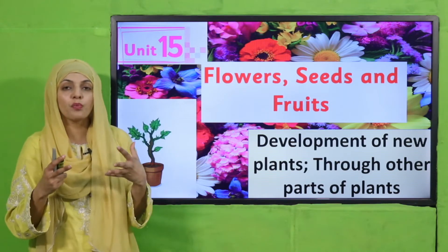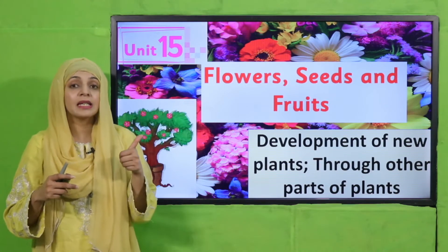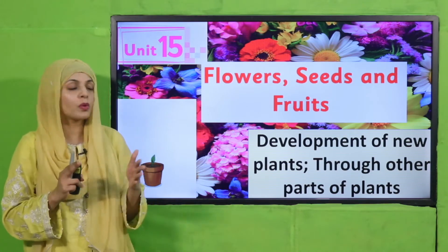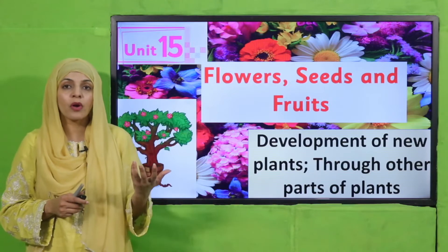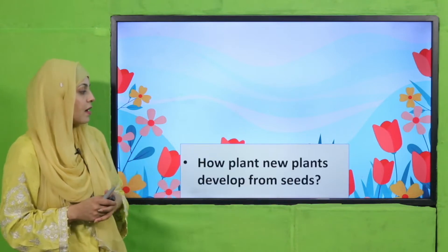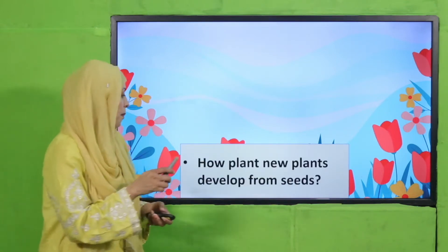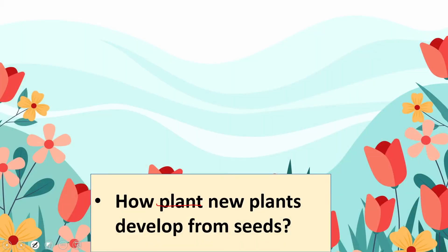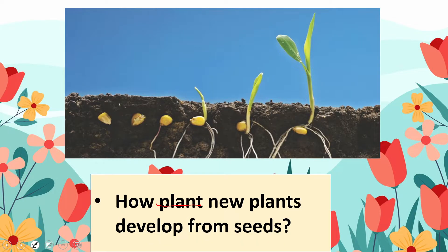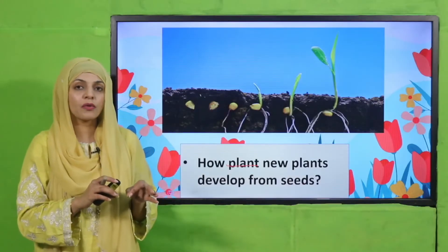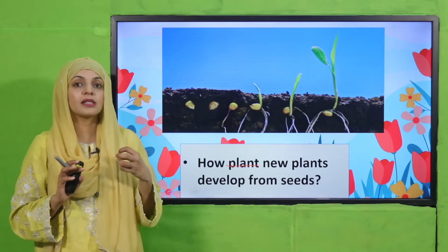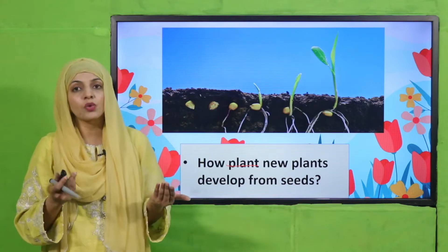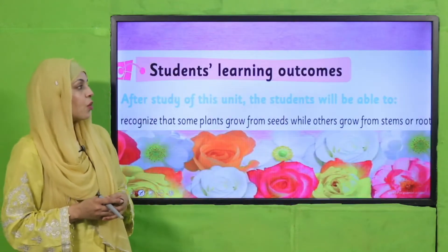There are two modes for new plants to develop. The first mode, which we discussed in detail previously, was by seeds. Today we will discuss the second mode, which is through other parts of the plant. But before moving on towards the lecture, let's quickly recap. New plants develop from seeds — when you sow seeds into the ground, they have all the characteristics of the parent plant, and when they get the conditions necessary for growth, they germinate into a new plant.